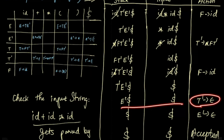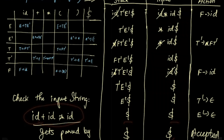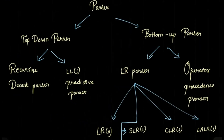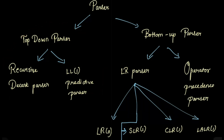We see this row: E-dash tends to empty. In the accept step, the given string id plus id cross id is parsed by the given predictive parser table. We can complete it. In this video, we covered the top-down predictive parser table. The next video will cover the bottom-up parser table. Please like, subscribe for the next video.